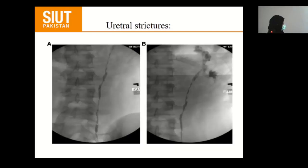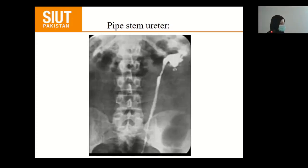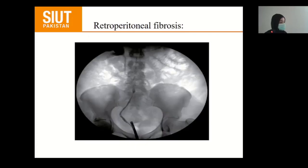Again, ureteral stricture showing narrowing of the ureter. Pipestem ureter is also a rigid tube-like ureter that occurs in genitourinary TB. And retroperitoneal fibrosis — in this condition, the ureter is deviated towards the medial side.